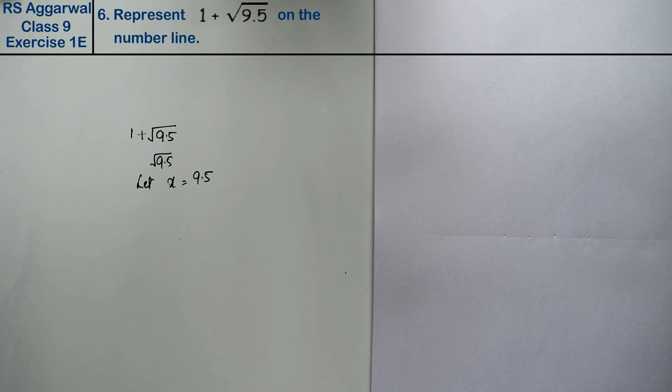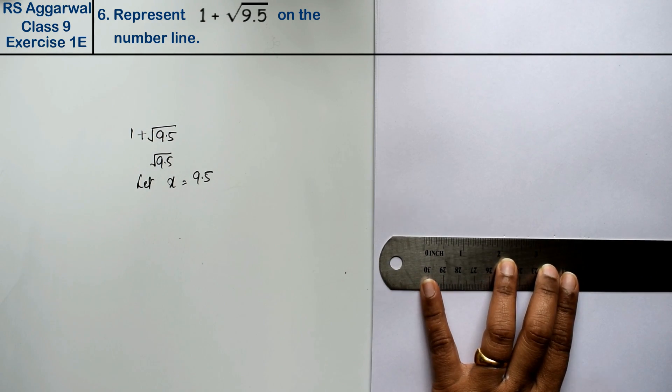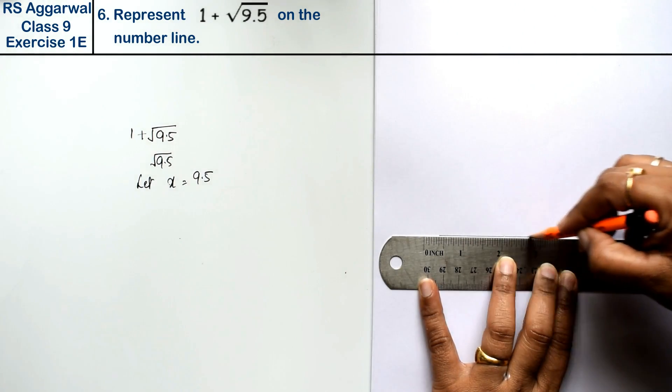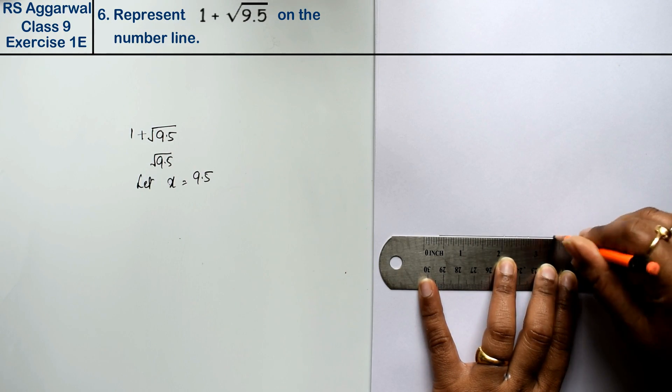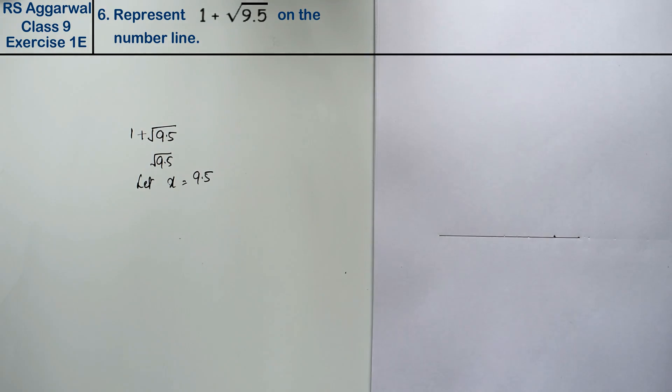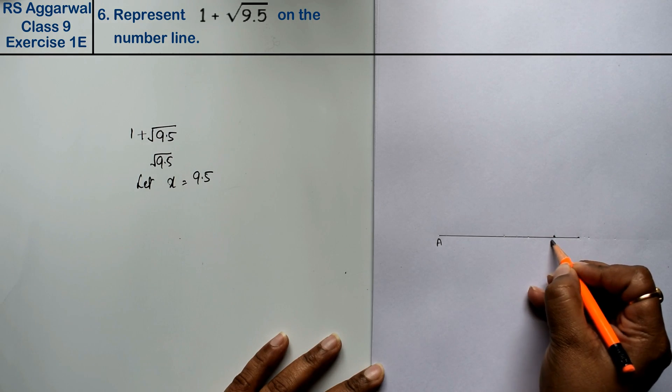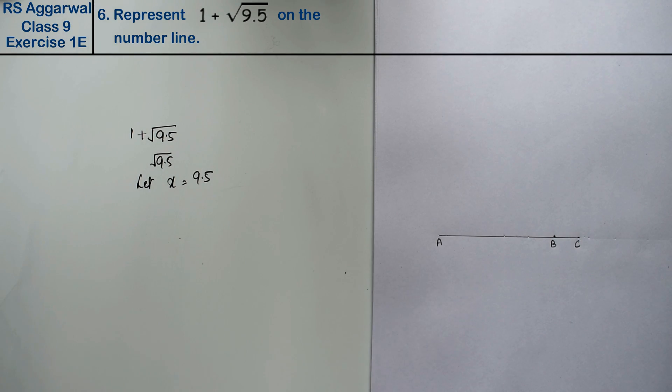First we will draw a line which we will take as 9.5 units. This line is 9.5 units and we will extend it by one more unit. So this becomes A, B, and C.